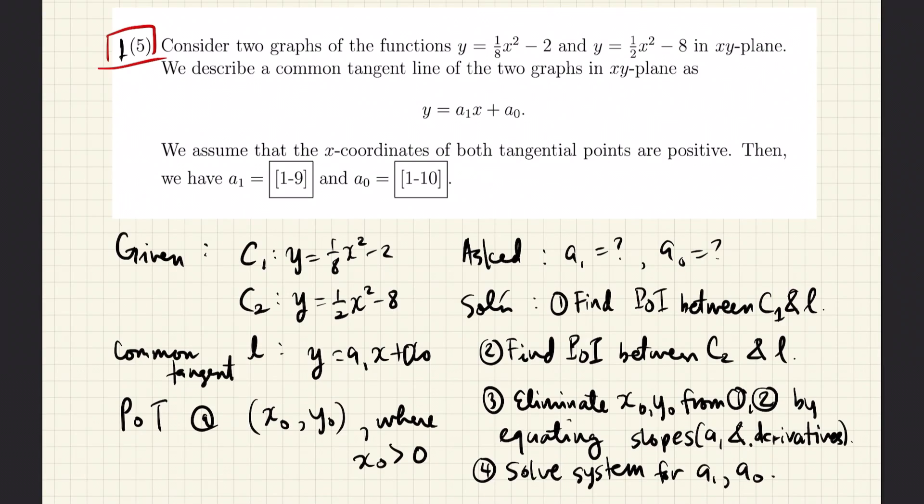For this problem we are given two parabolas, C1 and C2. We are told that both parabolas have a common tangent line.